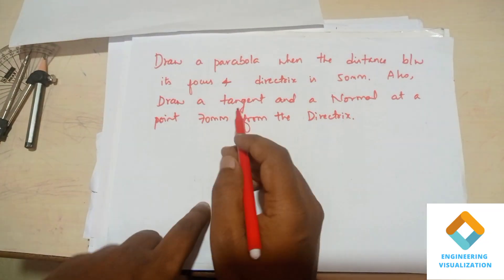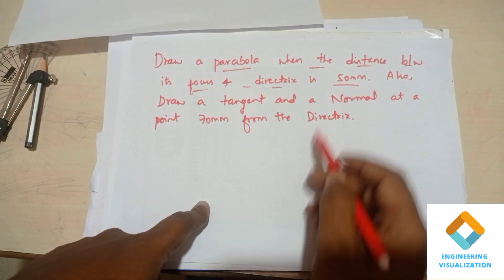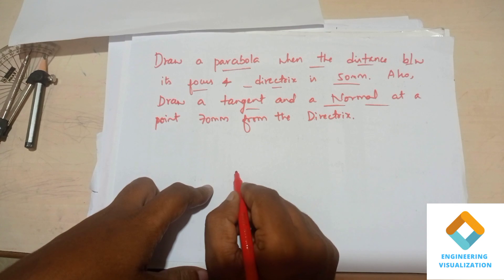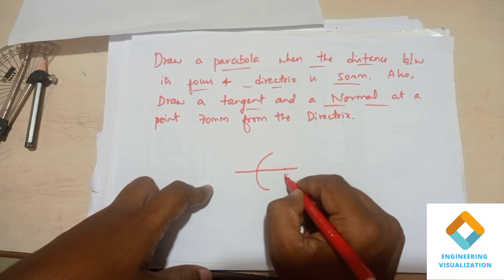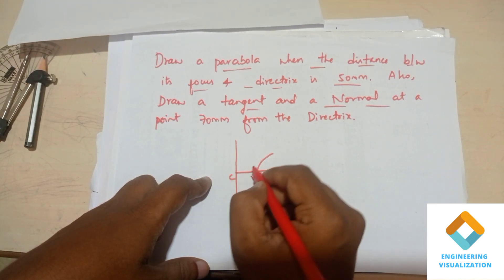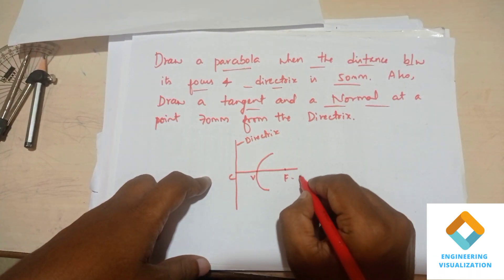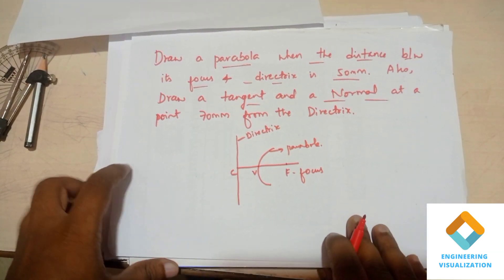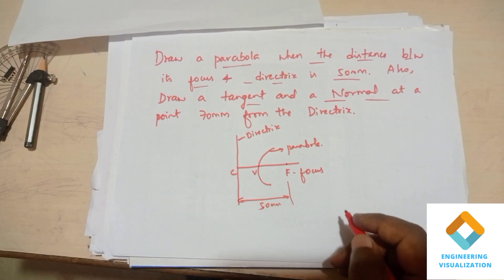Welcome to the engineering visualization channel. Today we are going to solve a problem on parabola: draw a parabola when the distance between its focus and directrix is 50mm. Also draw a tangent and normal at a point 70mm from the directrix. Here, F is the focus and this is the directrix. The distance given between the directrix and focus is 50mm.